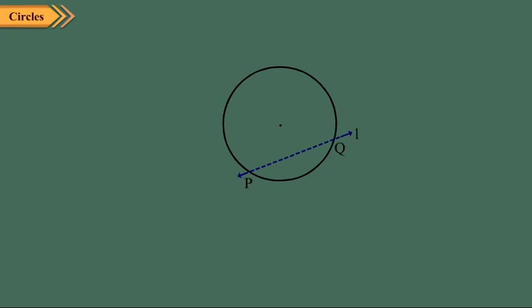A line which intersects the circle at two distinct points is called its secant. In the figure, line L intersects the circle at P and Q, so it is a secant.